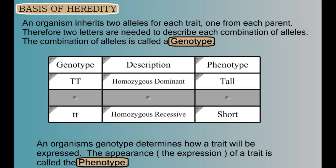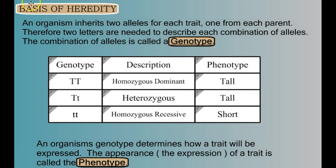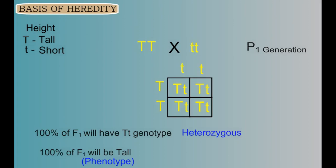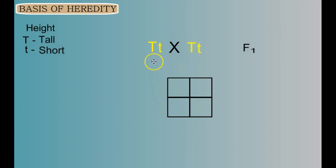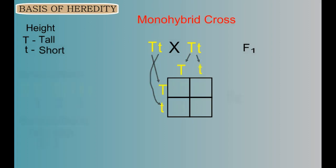Based on the law of dominance, we know that plants with the Tt genotype will have the tall phenotype. The heterozygous genotype shows the same phenotype as homozygous dominant — they will look tall. Now on to our second generation cross: if we take these two F1 hybrids and cross them using our Punnett square, we show each parent can give half its genetic material.